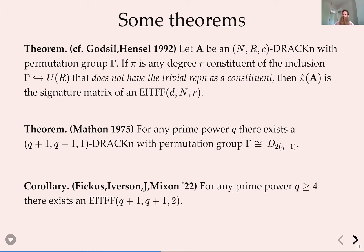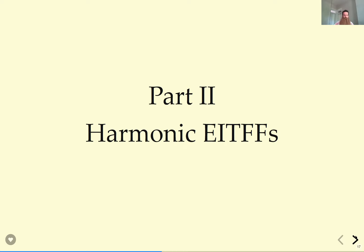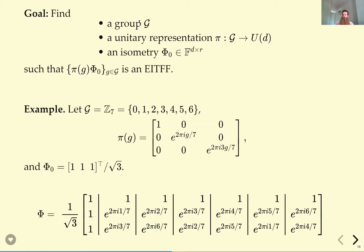We just used representation theory to build EITFFs. A common approach for building ETFs also uses representation theory: find a group G, a unitary representation π of G, and a fiducial isometry such that when you hit the isometry with the whole group orbit, you build an EITFF. For ETFs this corresponds to harmonic ETFs and difference sets. Since ETFs are EITFFs with R=1, let's start there.